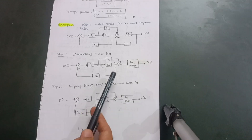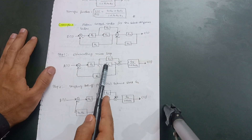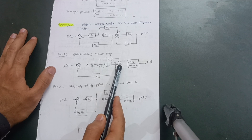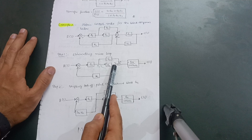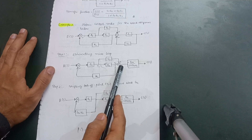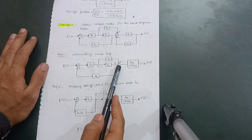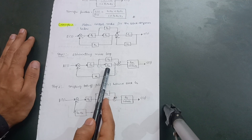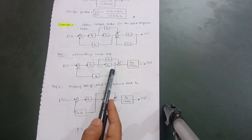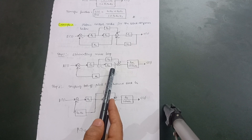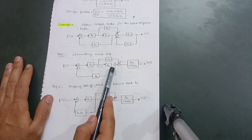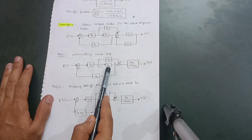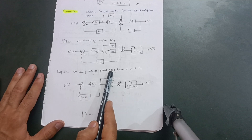Now, observing the diagram, there is a takeoff point and a summing point. I cannot shift this takeoff point in front of the summing point because that is a critical rule — I should apply the critical rule only when there is no other possibility. Here I can shift the takeoff point behind the block. I have explained this in earlier videos, so you can review those concepts. So I will shift takeoff point T2 behind the G2 block.